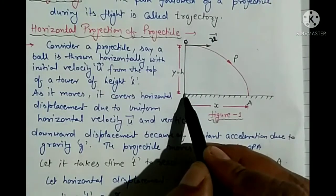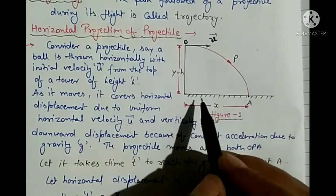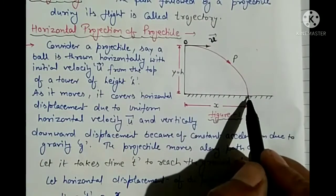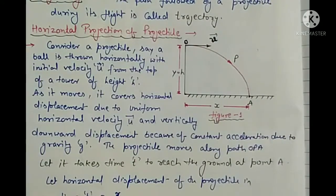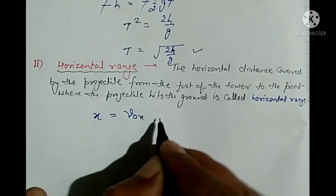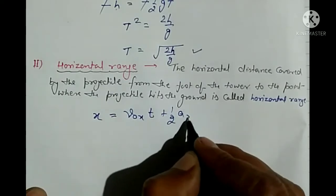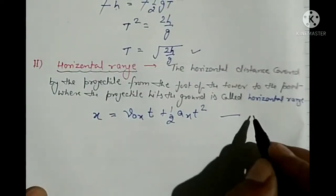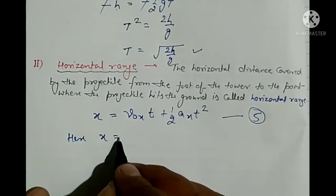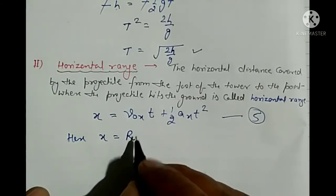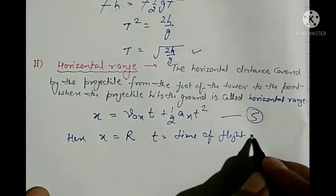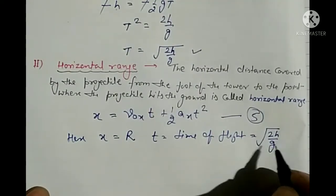Foot of the tower aur jahan pe projectile ground pe hit karti hai — yeh distance horizontal range kehlati hai. Using equation: x = V₀ₓt + ½aₓt². Here x becomes the horizontal range R, and T is the time of flight = √(2h/g).